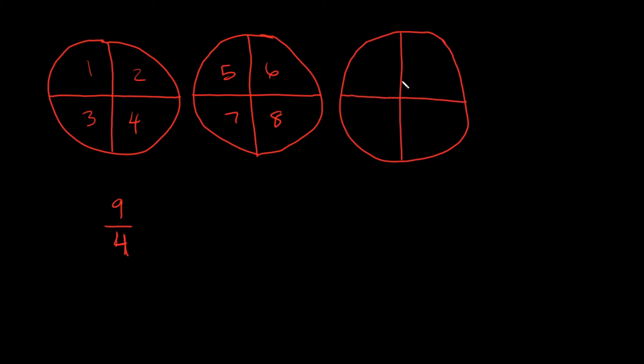So 5, 6, 7, 8, 9. There it is. So again, so if I'm saying I ate 9 fourths of a pizza, this bottom number is telling me how many parts I have in each pizza. And this is the total I ate.